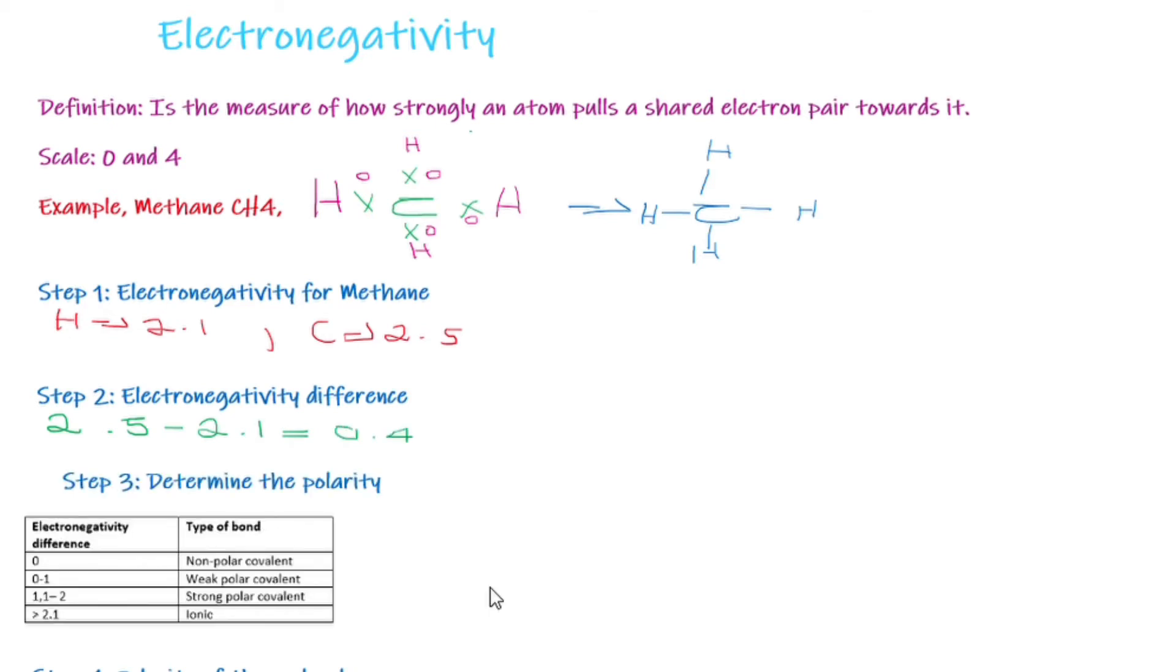Step three is to determine the polarity. From this table here, I reference from a physics textbook. It states that if you have an electronegativity difference of zero, the type of bond is non-polar covalent. And if it's 0.1, we have a weak polar covalent.